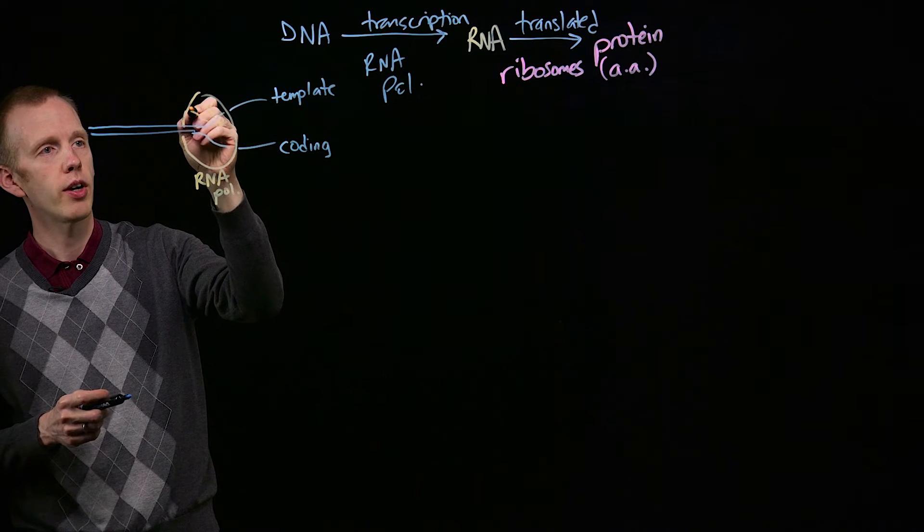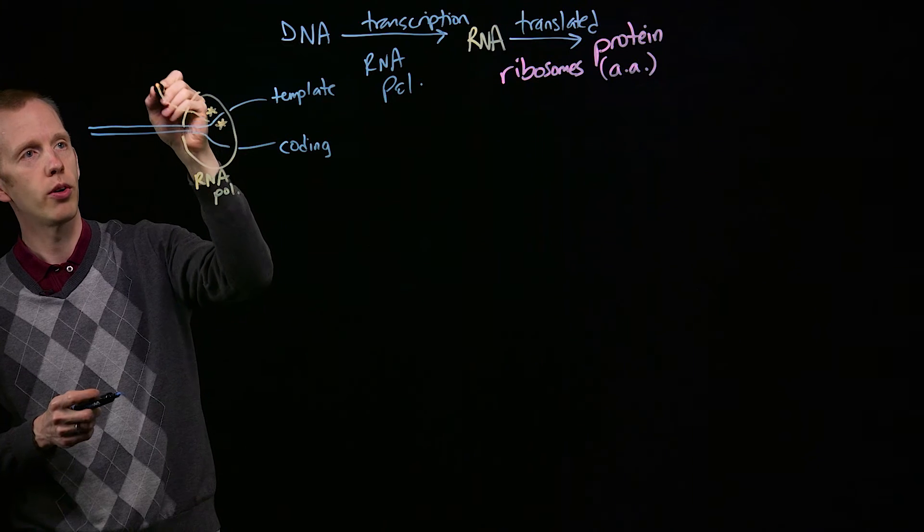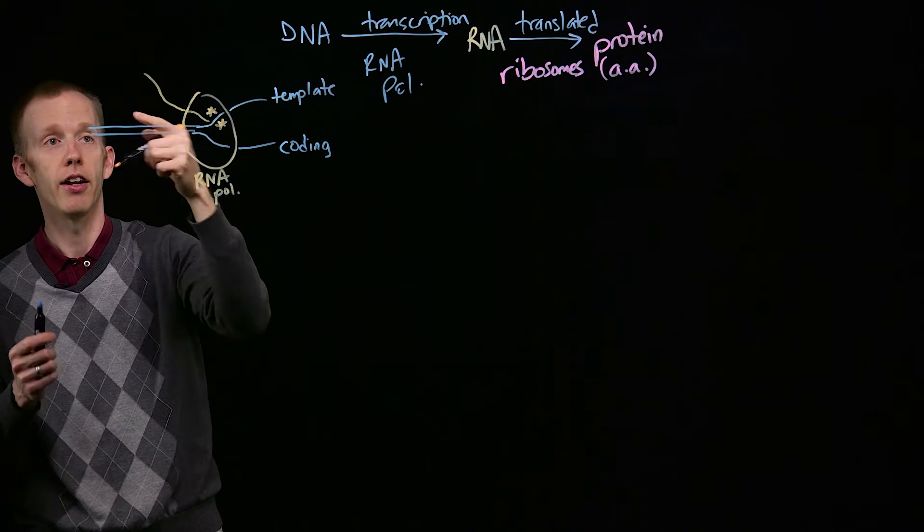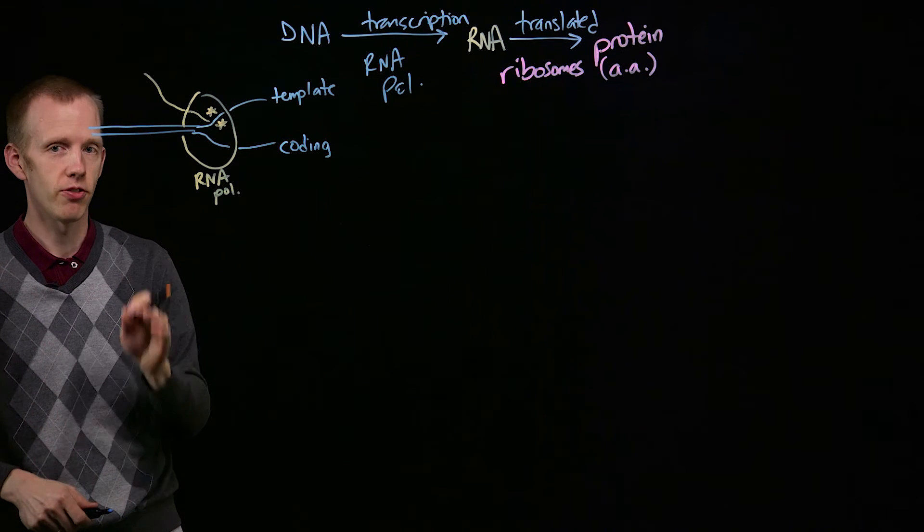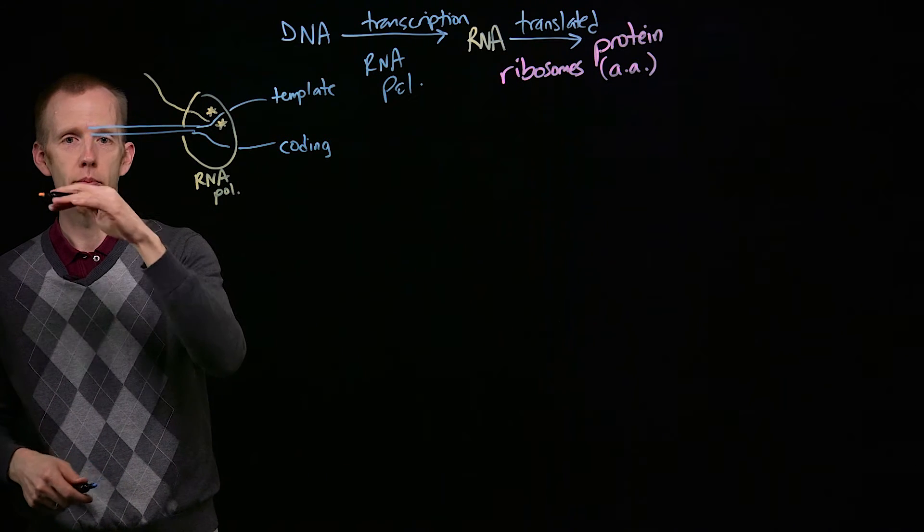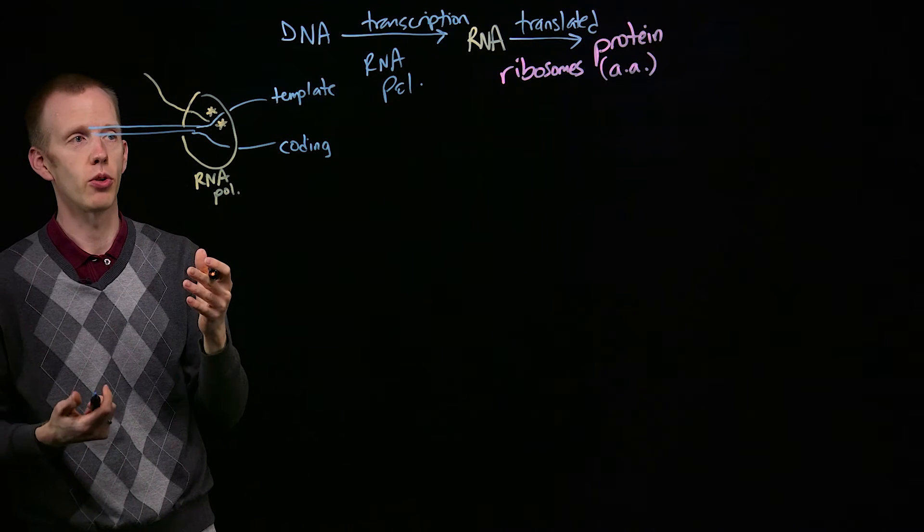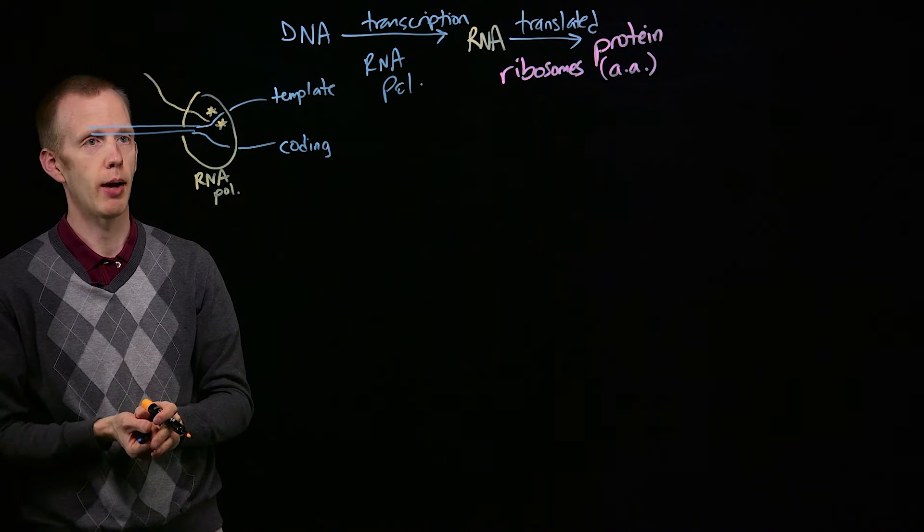This growing strand of RNA exits a hole in this protein and the end of the transcript that was synthesized first exits RNA polymerase and is floating around in the nucleus where this transcription step is happening.